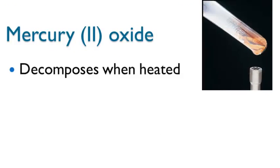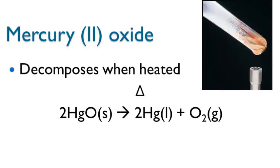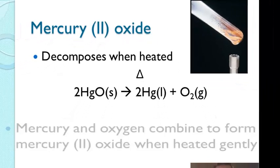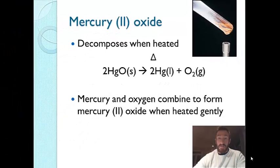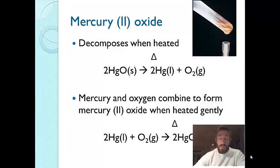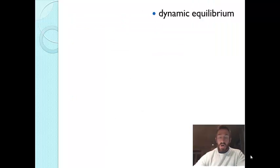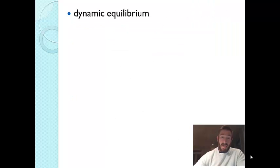Here's an example. Let's say we have mercury(II) oxide. It decomposes when heated, producing liquid mercury and oxygen gas. Mercury and oxygen can recombine to form mercury(II) oxide when heated gently. So the reverse reaction can go forward and reform the reactant — we start with the mercury(II) oxide. This would also be a reversible reaction.